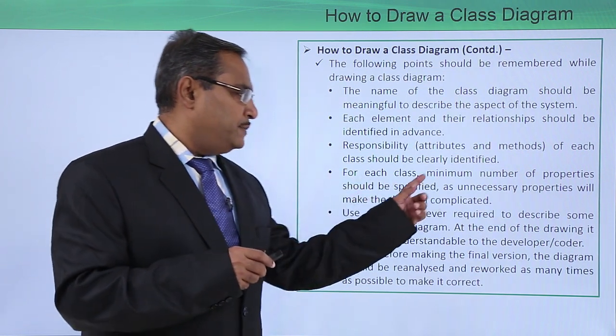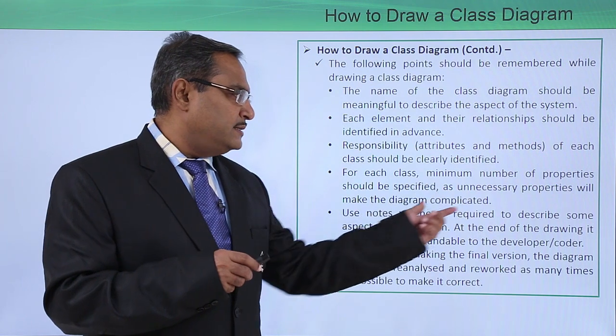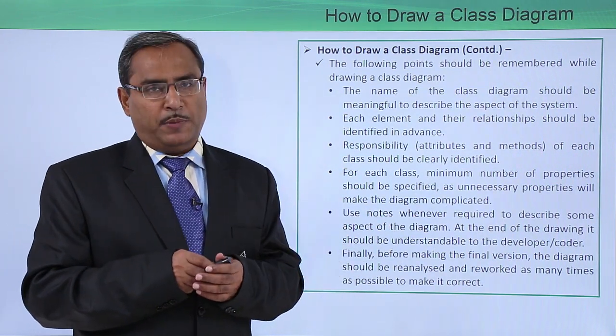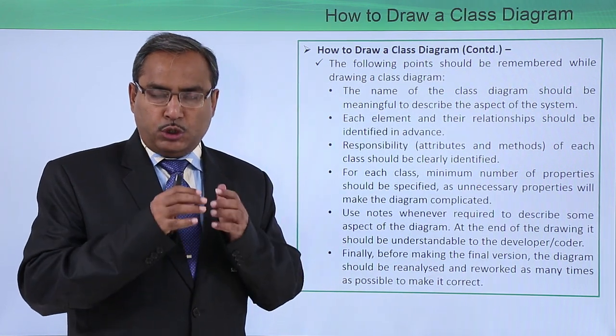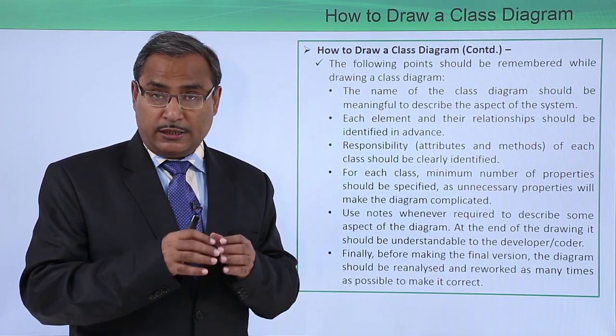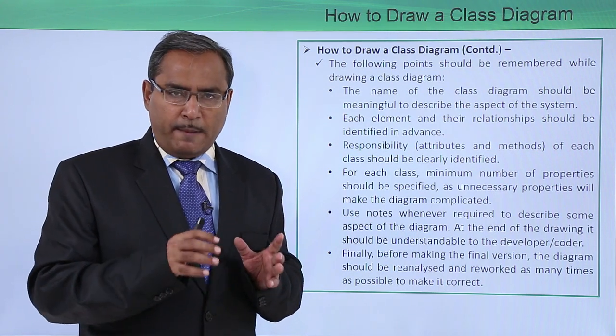For each class, minimum number of properties should be specified as unnecessary properties will make the diagram too complicated to get implemented. So we should mention only those properties which are essential. No redundant properties, no redundant methods should be mentioned there.